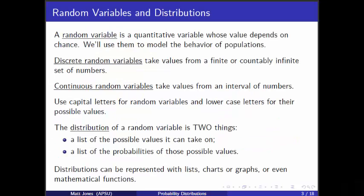A random variable is a quantitative variable whose value depends on chance. We'll use these to model behavior of populations. We're still doing probability here, not statistics. So we're thinking about the behavior of a variable across an entire population.